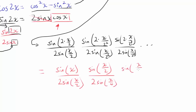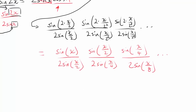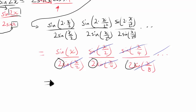Look at this — the sine of x/2 terms cancel, the sine of x/4 terms cancel, the sine of x/8 terms cancel, and this goes on infinitely. But we have two conflicting effects: we're dividing by 2 repeatedly (which might push things to 0), yet the sine arguments are also going to 0. So we can't immediately predict what this expression equals.